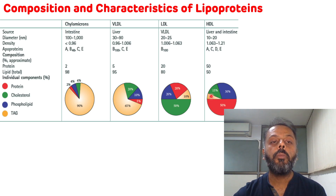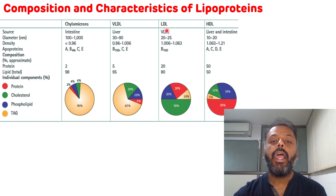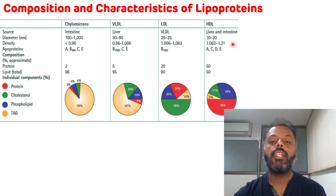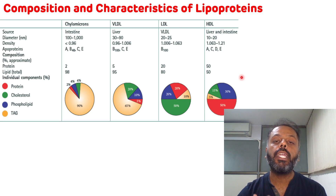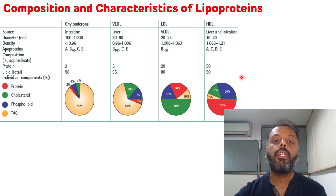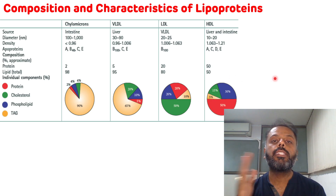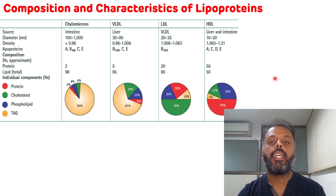The key points to remember are: chylomicron contains the highest amount of triacylglycerol; LDL contains the highest amount of cholesterol; while HDL contains the highest amount of protein, the highest amount of phospholipid, and the lowest amount of triacylglycerol. That is the composition and characteristics of lipoproteins.